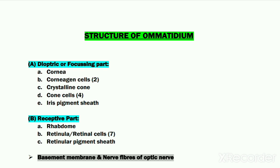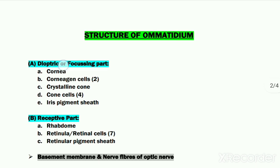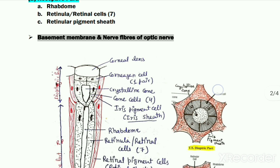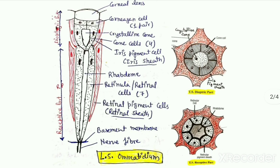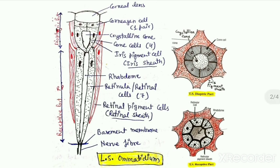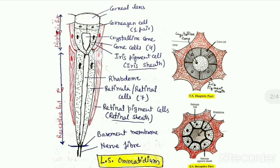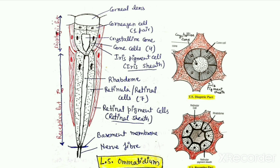Now let us see in detail the structure of an ommatidium. Each ommatidium consists of numerous cells arranged end to end along a central axis. Structurally, one ommatidium can be divided into two parts: the upper dioptric or focusing part, and the lower receptive part. In the longitudinal section diagram, the upper portion is the dioptric part and the lower portion is the receptive part.